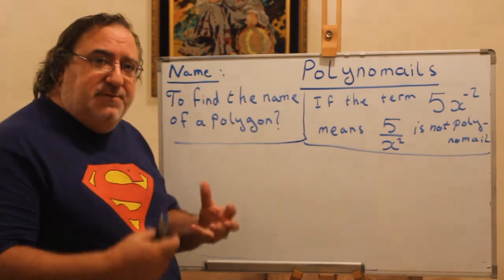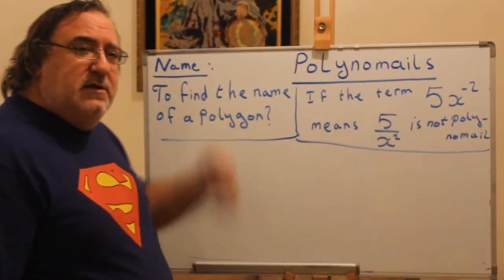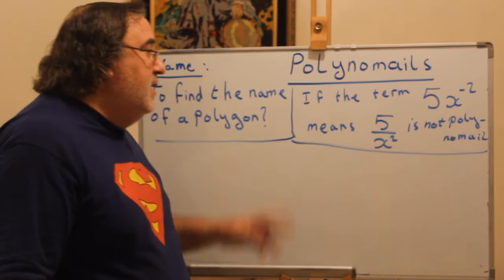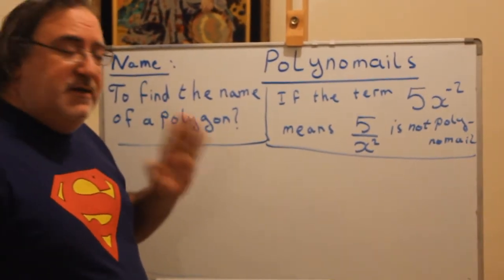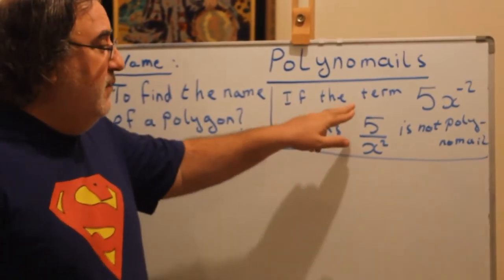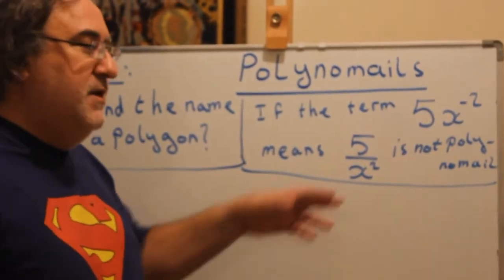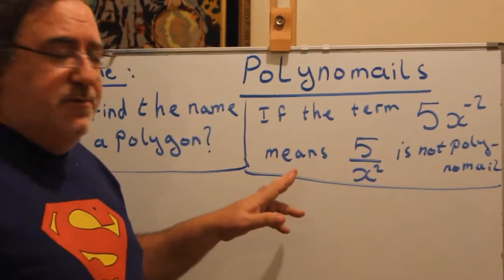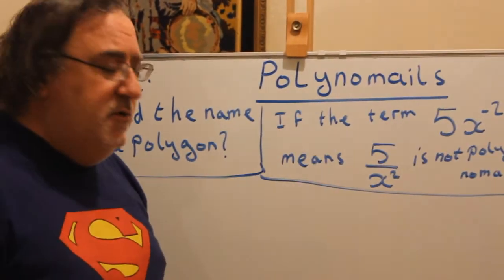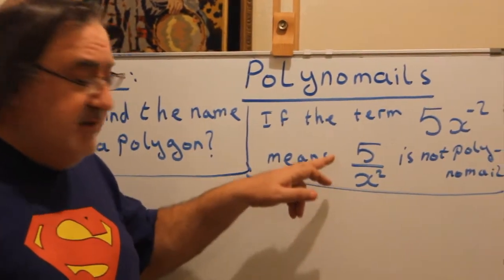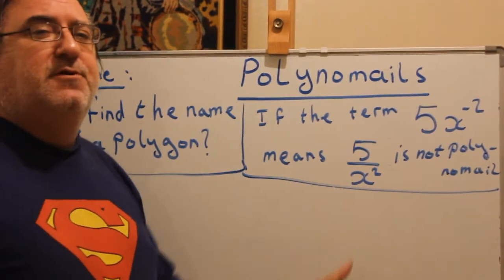You know what a term is from the previous lesson. If you don't remember, go back to that lesson. Now, before we start — if a term has a negative power, it is not a polynomial. So if we have 5x to the power of negative 2, which means 5 over x squared, this is not considered a polynomial.